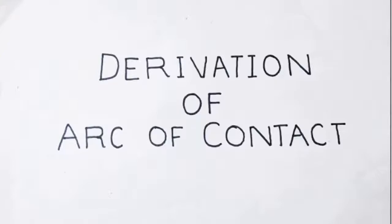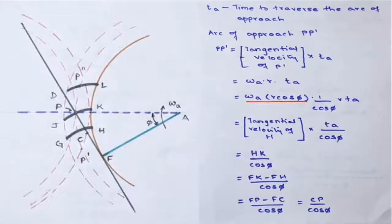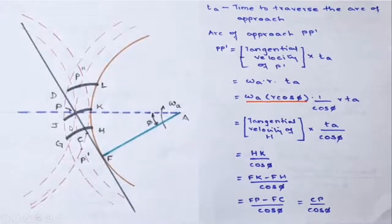Let's begin with the video lecture. The arc of contact is the distance traveled by a point on either of the pitch circles of the two gears during the period of engagement or disengagement.